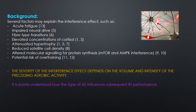So what causes the interference effect? There are many factors that may explain it, including acute fatigue, impaired neural drive, a fibre type transition away from type one into type two fibres which causes fatigue, elevated concentrations of cortisol, attenuated hypertrophy, reduced satellite cell density, and altered molecular signalling for protein synthesis — specifically an interaction between mTOR and AMPK — and finally a potential risk of overtraining.